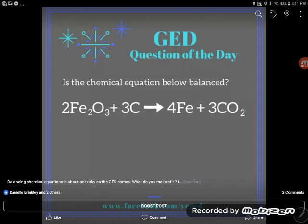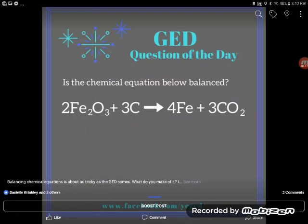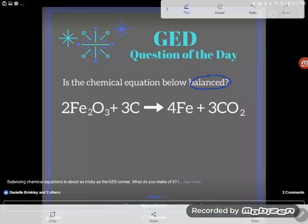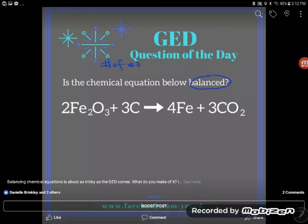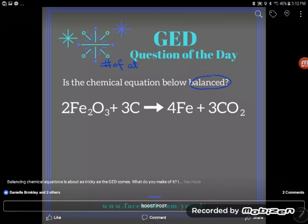Here it says is the chemical equation below balanced? Is it balanced? So a chemical equation is balanced if the number of atoms of each element is the same on both sides.